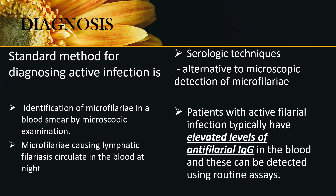To diagnose active infection, we identify microfilariae in a blood smear by microscopic examination, or use serologic techniques for microfilariae causing lymphatic filariasis that circulate in the blood at night. This is an alternative to detection of microfilariae. Patients with active filarial infection typically have elevated levels of antifilarial IgG in the blood, and these can be detected using routine assays.